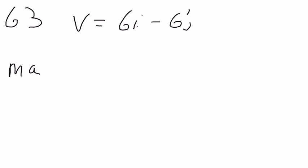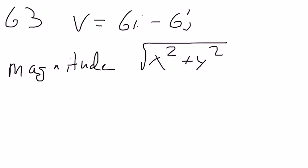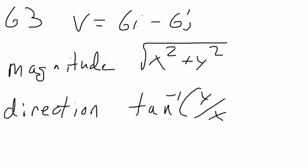Okay, the magnitude formula of a vector is always going to be the x component squared plus the y component squared, and then the square root of that. The direction angle is always going to be the inverse tangent of y over x.